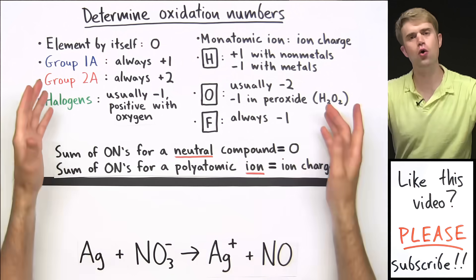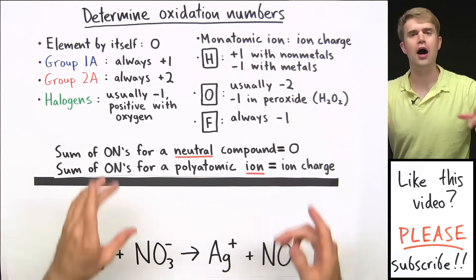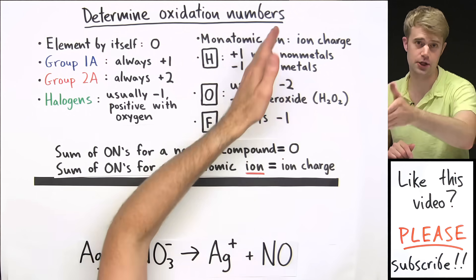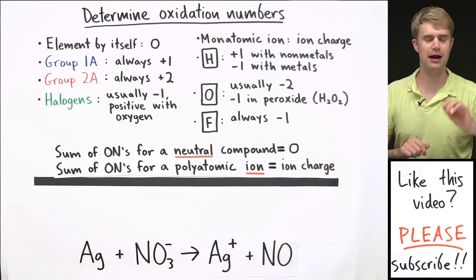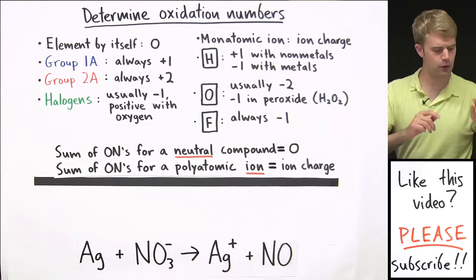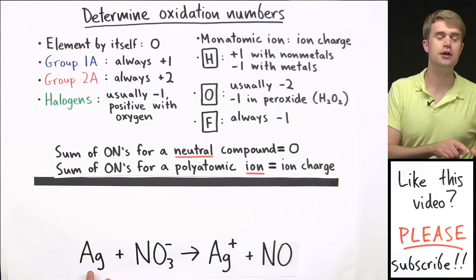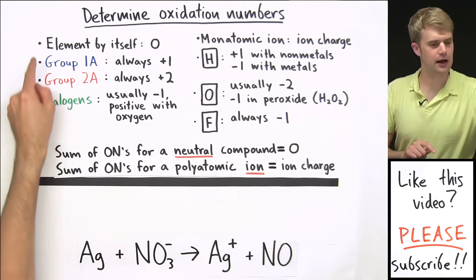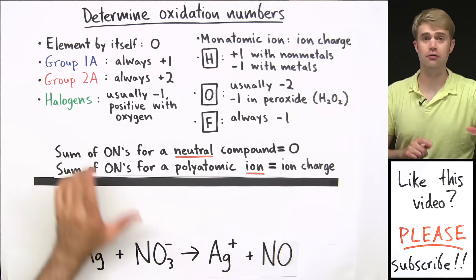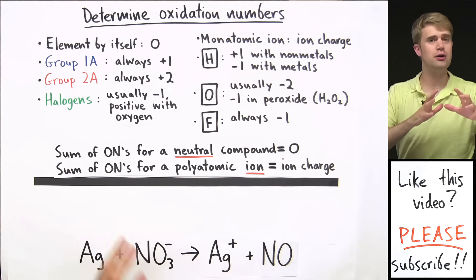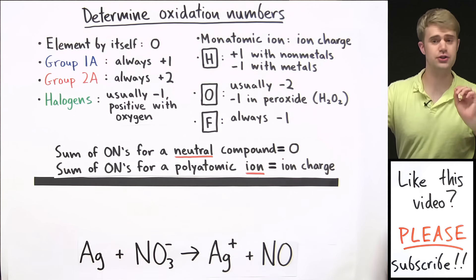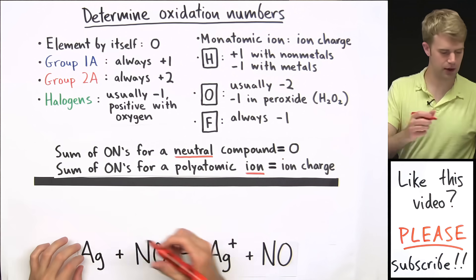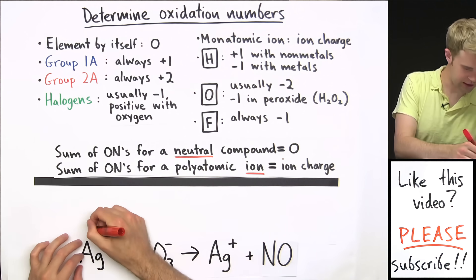Now, if this stuff is totally new to you, I have a couple of videos on just determining oxidation numbers — you might want to check that out for some background. Let's start with Ag, silver here. Silver is an element by itself — it's not combined with any other elements. So its oxidation number is zero.